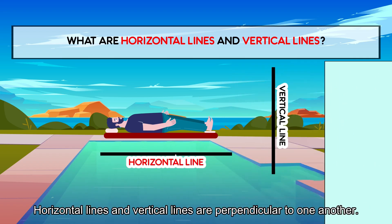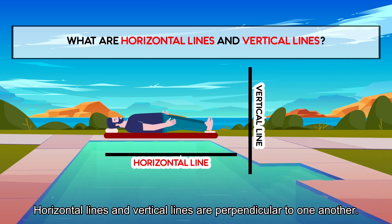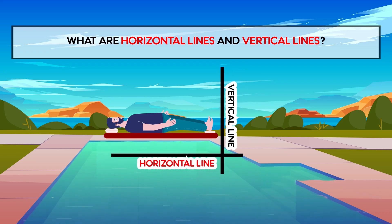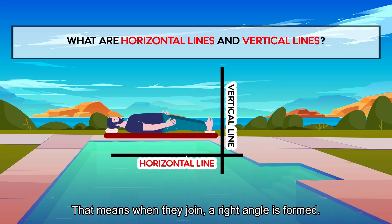Horizontal lines and vertical lines are perpendicular to one another. That means when they join, a right angle is formed.